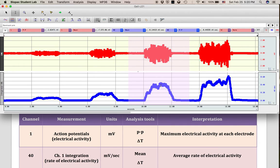And you would never want to take a peak-to-peak of your integrated channel because that doesn't really tell you a whole lot. What that's going to tell you is what your highest rate of electrical activity is and your lowest rate of electrical activity.